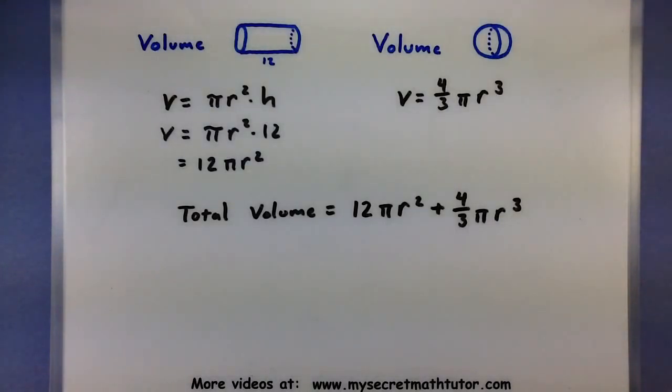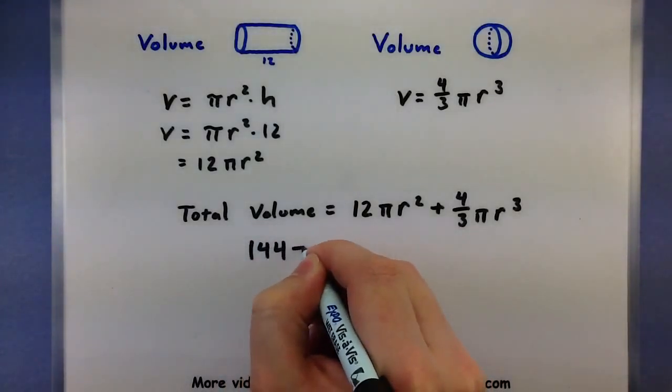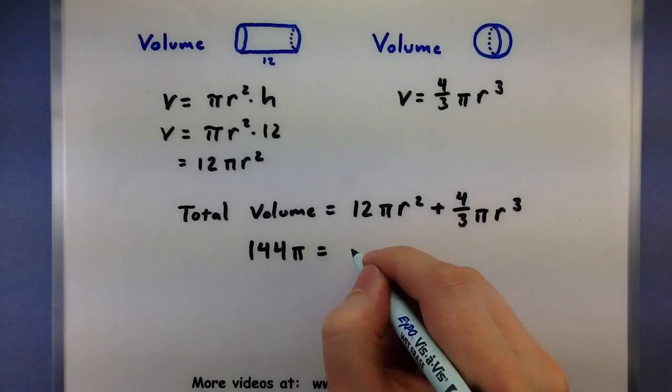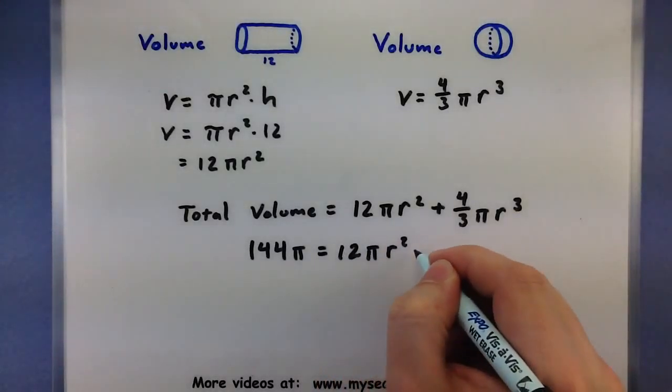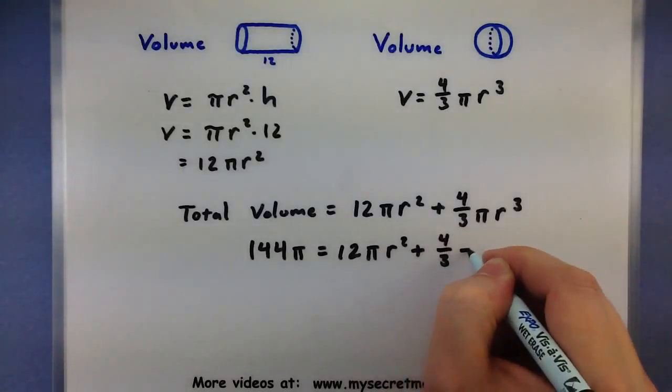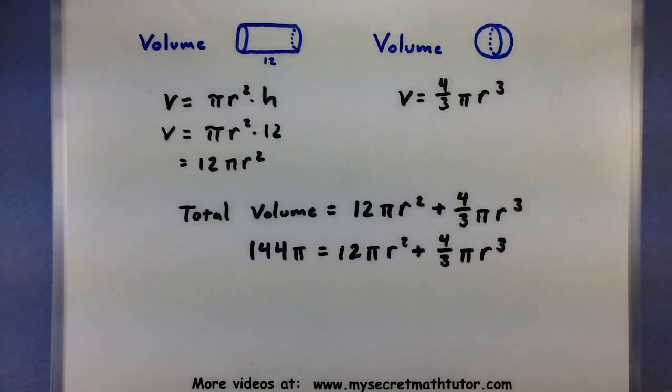So according to the problem, I want to know where the total volume will be 144 pi. So 144 pi, when is it equal to the volume of the cylindrical piece plus the volume of both of my spheres? Here we are. So to solve this problem, I need to solve the following polynomial equation, and it looks like it's a cubic because I have an r cubed.